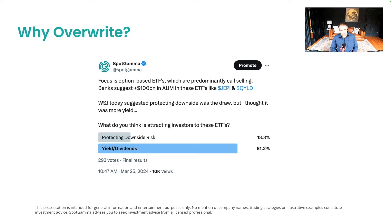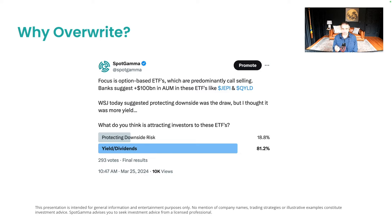We ran a poll on our Twitter feed after reading a Wall Street Journal article suggesting that people pile into call overriding funds like JEPI — JPMorgan's S&P overriding fund — or QYLD for protection against drawdowns. We really framed it as yields and dividends, and the poll results confirmed this: people are looking for yield since these things yield roughly 8%, not primarily for hedging if the market goes down.